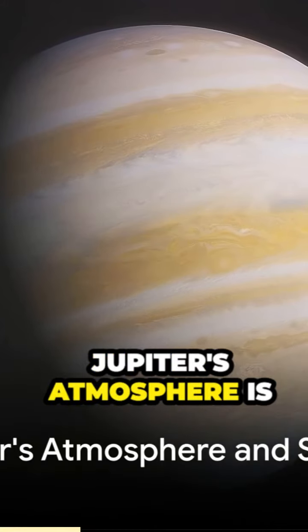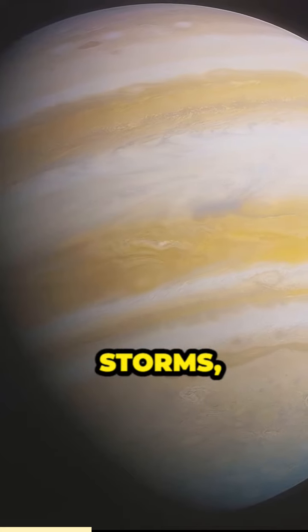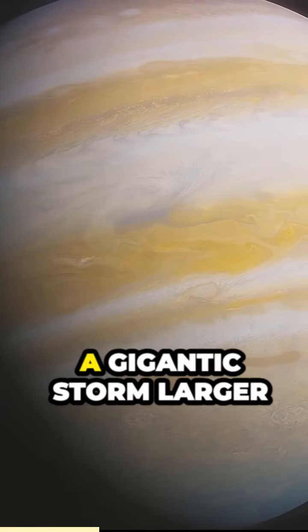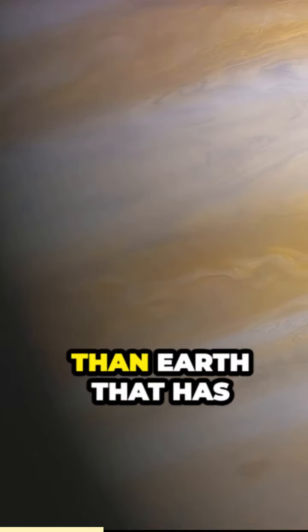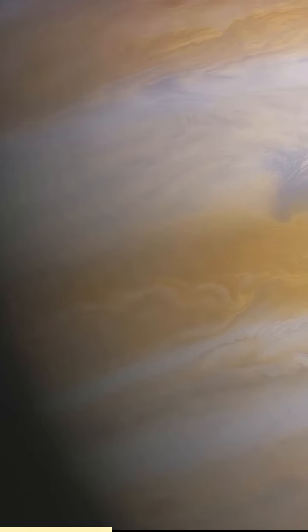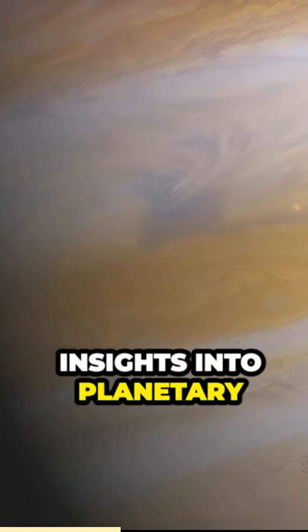Jupiter's atmosphere is a swirling tapestry of colorful clouds, storms, and the famous Great Red Spot—a gigantic storm larger than Earth that has raged for centuries. These atmospheric phenomena provide key insights into planetary weather systems.